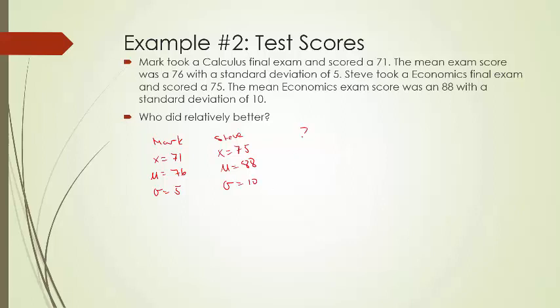So let's calculate their z-scores. The z-score for Mark here, it's the x minus the mean divided by the standard deviation. In this case it's 71 minus 76 divided by 5. It's minus 5 divided by 5. So he's one standard deviation below the mean.